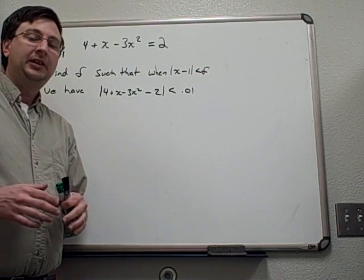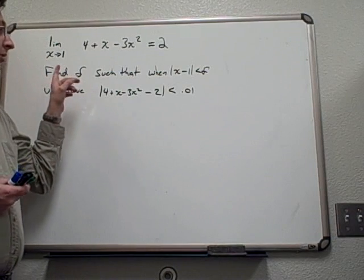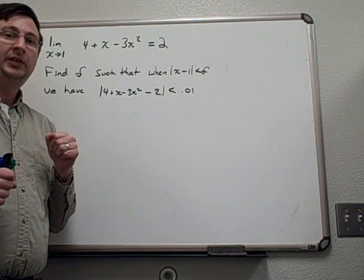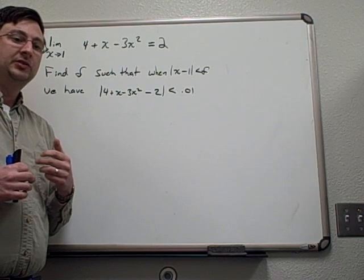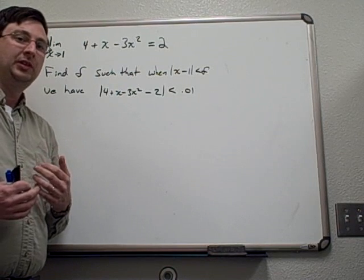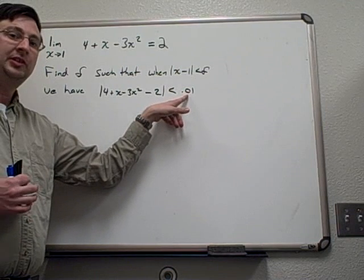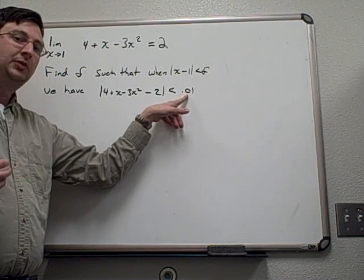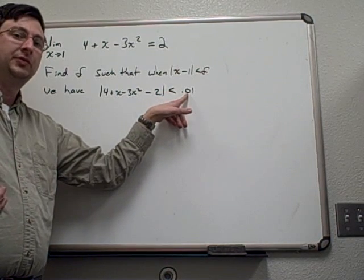All right, so we're taking a look at a limit problem where we know the limit, but what we're really interested in finding out is what's going to happen as we want the function to be within a point, say in this case, a 0.01 error tolerance of the outputs. So we're looking for what inputs guarantee me to be within 0.01 of the answer 2 for the function.